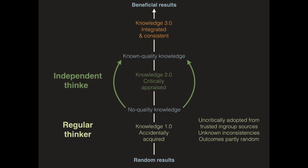The second level is of the independent thinker who critically appraises, self-constructs, and self-selects knowledge and skills. Who relies on both in- and out-group sources, who is aware of inconsistencies in the knowledge, and who is generally more able to produce predictable outcomes.